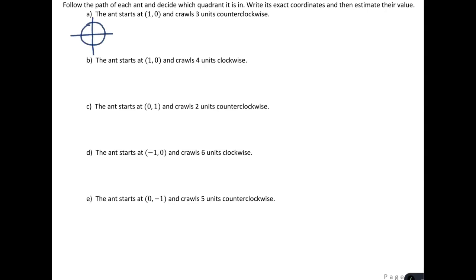So the first one: we're going to start at (1, 0), which is the normal place to start. An ant is starting at this point and crawling three units counterclockwise. Think carefully about your direction — I easily get myself backwards if I don't think about it. Counterclockwise is the usual positive direction for us; clockwise would be a negative angle. So this one is in standard position.